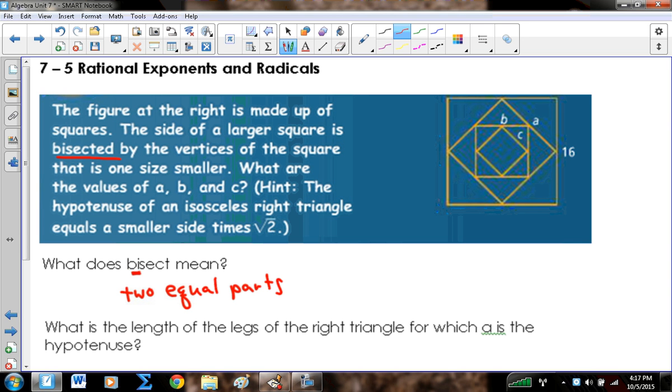So what that means is this side a is cutting this side of the square, which they told us is 16, into two equal parts. So it says, what's the length of the right triangle for which a is the hypotenuse? Hypotenuse is the side that is across from or opposite the right angle. Some people refer to it as the side that's on a slant, although sometimes the triangles are drawn in a different position. The hypotenuse is always the longest side of the triangle. So if this is 16, this vertical side here is 16 and it's cut in half, then the legs of the triangle, the two sides that make up the right angle, those are going to be 8.